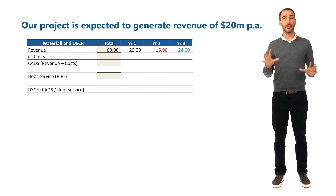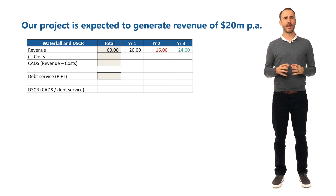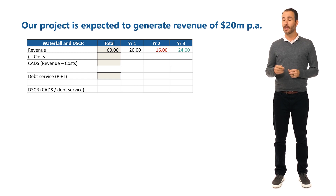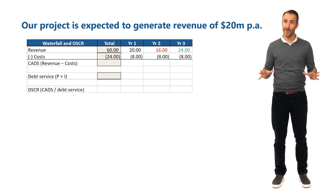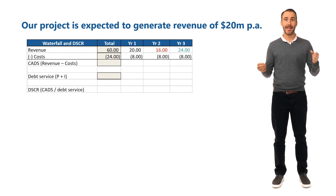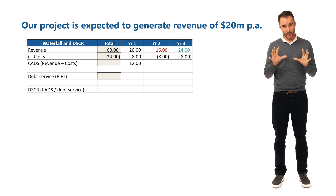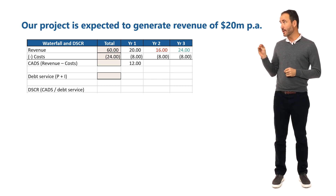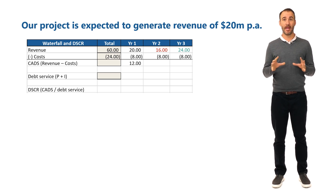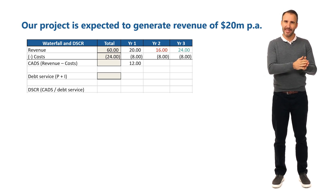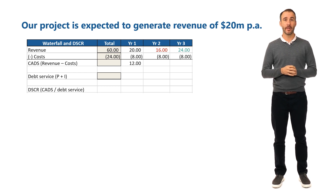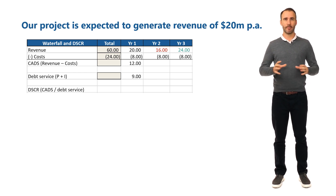We had a temporary issue that reduced our revenue in year two. So let's investigate the impact on debt service. Our costs are $8 million every year. In year one, things went nicely to plan and CADS was $20 million less $8 million, which equals $12 million. Debt was also sculpted to a 1.33x DSCR and then fixed, so at $12 million divided by 1.33, equaling $9 million per annum.